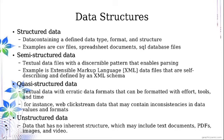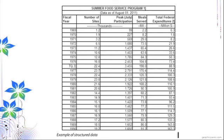Unstructured data has inherently no structure — examples include text documents, PDFs, images, and video files. Looking at an example of structured data, you have rows and columns where each column is specified by what type of information it contains — for example, number of meals served, the year, federal expenditures, etc.